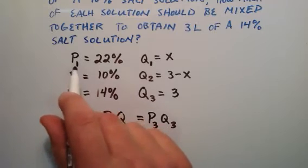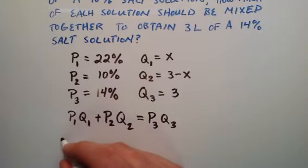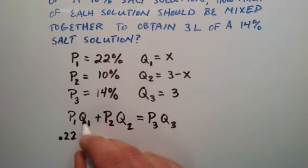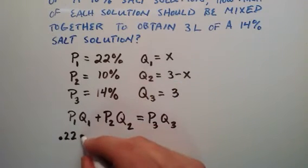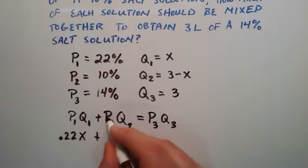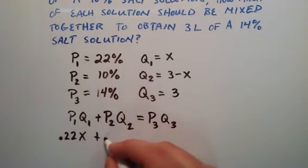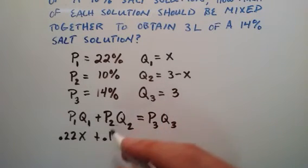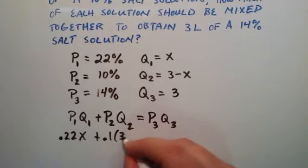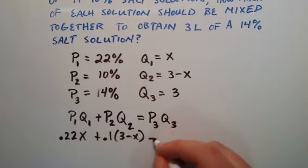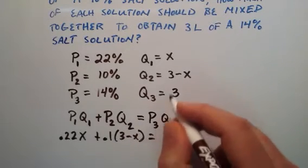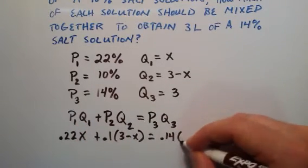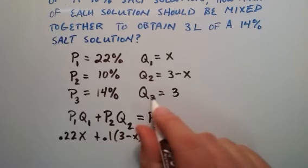We already know what P1 is - it's 22%, so in decimal form 0.22. Q1 we said was equal to x. Then we're adding that to P2, which is 10% or in decimal form 0.1. Q2 is equal to 3 minus x. That's equal to P3, which was 14% or 0.14, multiplied by Q3, which is simply 3.